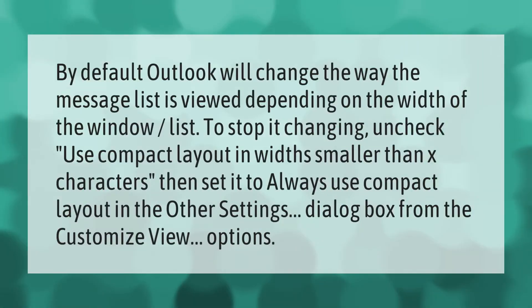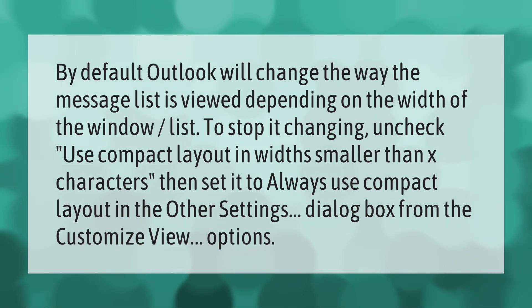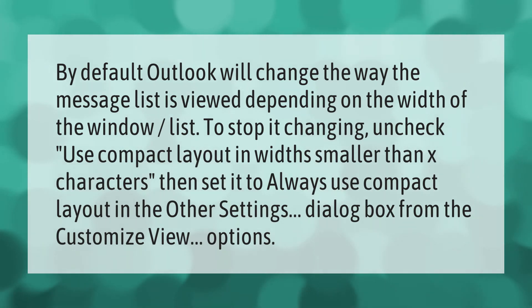By default, Outlook will change the way the message list is viewed depending on the width of the window. To stop it changing, uncheck 'Use compact layout in widths smaller than X characters', then set it to always use compact layout in the Other Settings dialog box, accessed from the Customize View options.